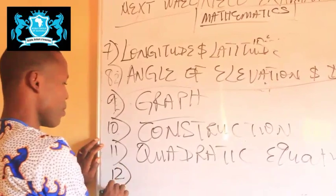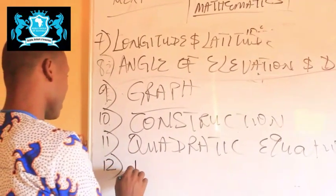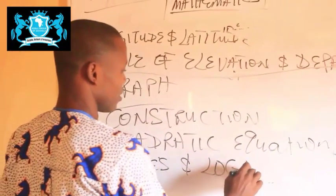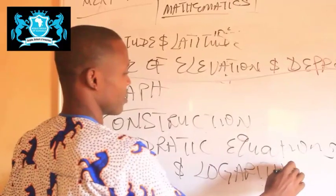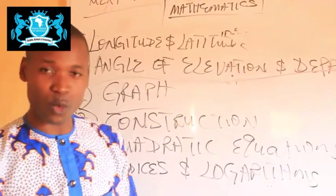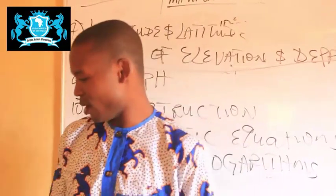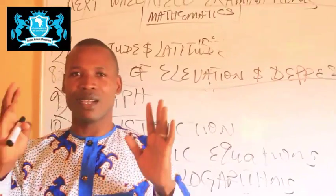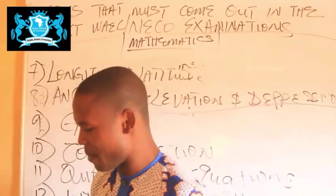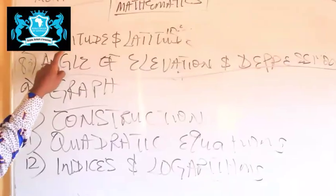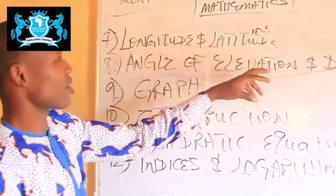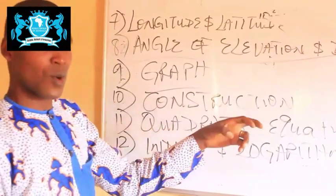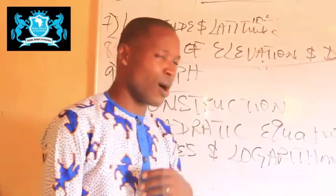The last but not the least is Indices and Logarithms. I have just given you 12 topics to focus on as you prepare for your examinations: 1) Simplification, 2) Trigonometry, 3) Circle Geometry, 4) Bearing and Distances, 5) Probability, 6) Sets, 7) Longitude and Latitude, 8) Angle of Elevation and Depression, 9) Graph, 10) Construction, 11) Quadratic Equations, 12) Indices and Logarithms.